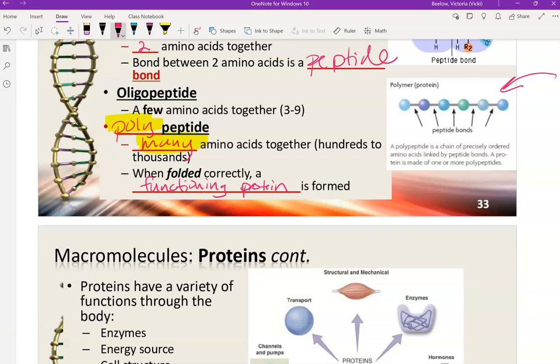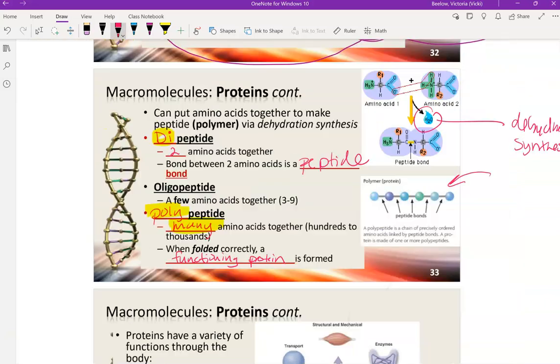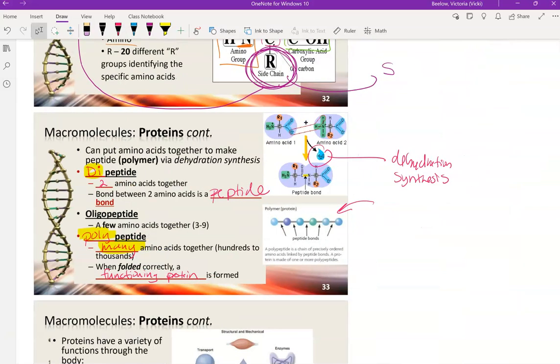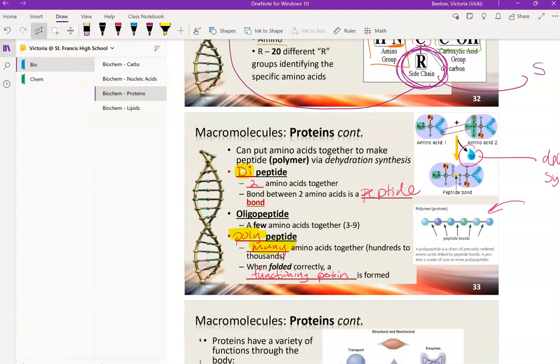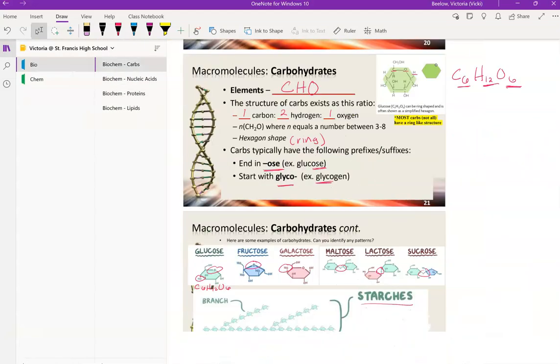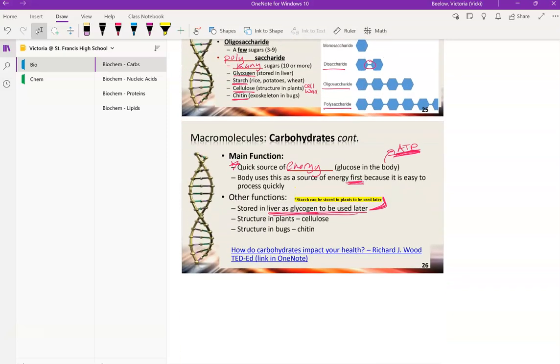And proteins do a lot of different things in our bodies. One of them being enzymes, which we're going to talk a lot about. And then just like a whole host of other things structurally in the body, and then also like other jobs. So remember when we talked about carbs, they did a lot of things too. Obviously, the main function being energy. But then we also saw how it could be stored to be used for later, and how it was a structural component in plants and in bugs.